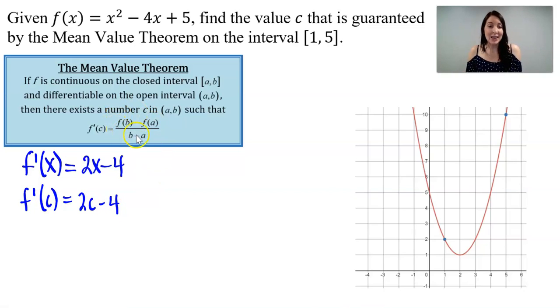Now I'm going to find the slope of the secant line, and that would be the slope between these two points here. So I will find f(5) minus f(1), all divided by 5 minus 1. So you can see here, if I found f(5), that would be 25 minus 20, which is 5 plus 5. I've got 10 minus f(1).